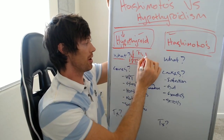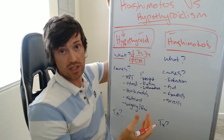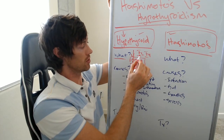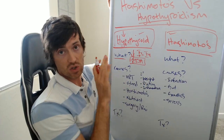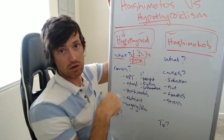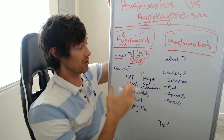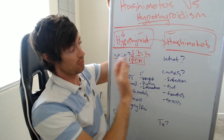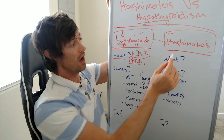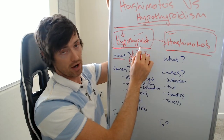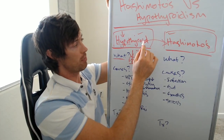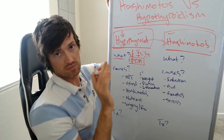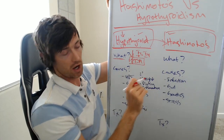The thyroid hormones we care about are T3 and T4, and you can test for these using simple blood tests. You can check to see if your thyroid is low by looking at the free thyroid hormones or by looking at the TSH. Now, this condition is not the same as Hashimoto's. Hashimoto's usually results in hypothyroidism, but not all cases of hypothyroidism are caused by Hashimoto's.